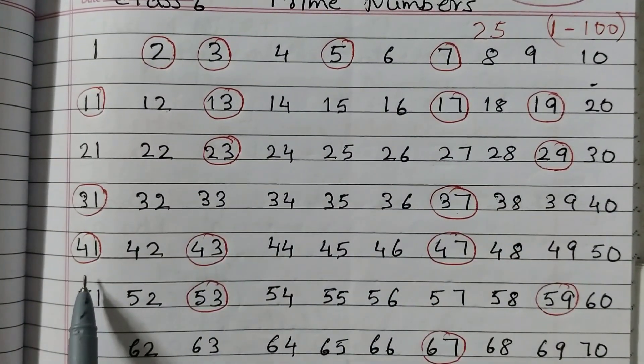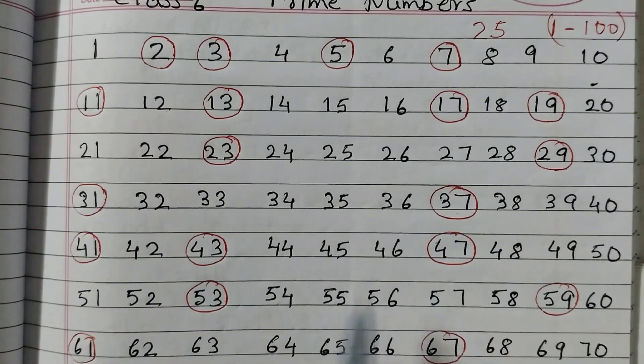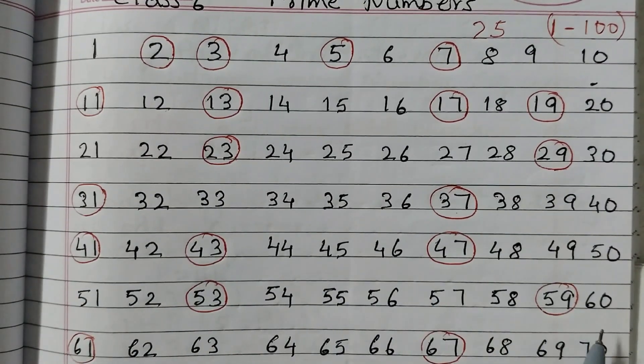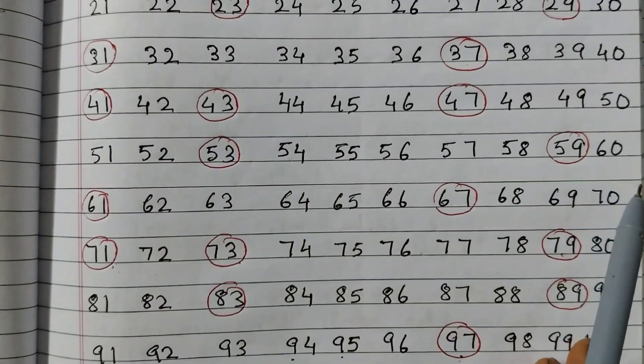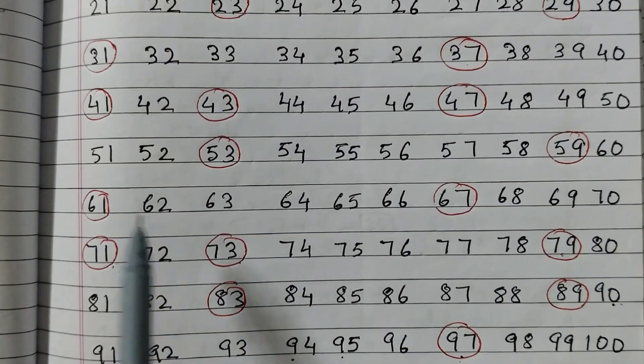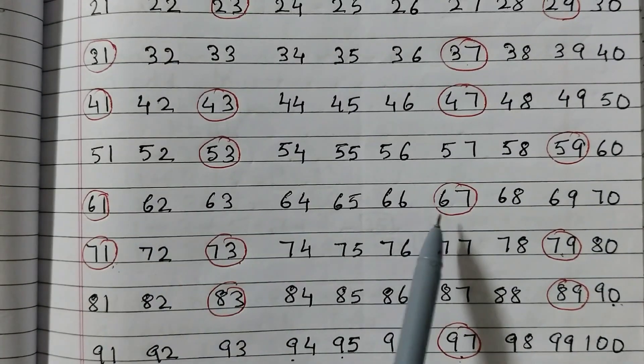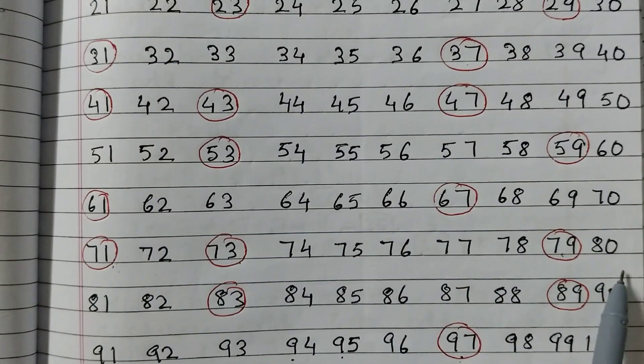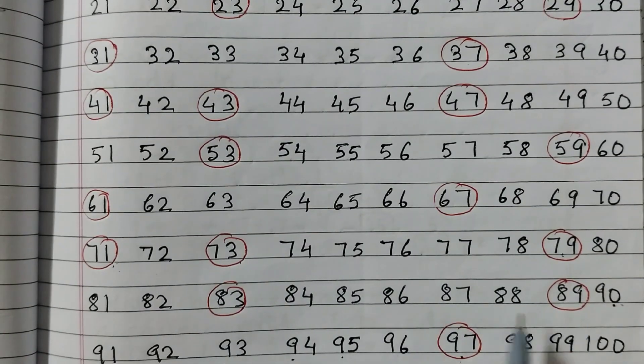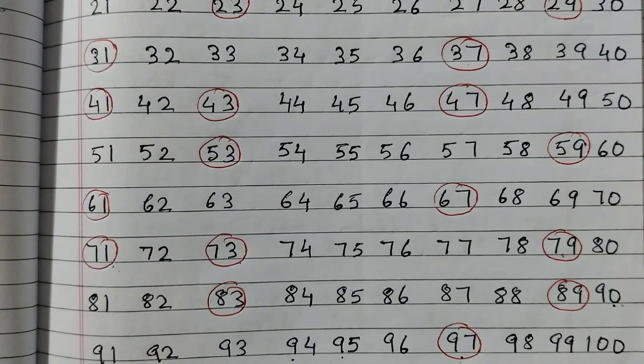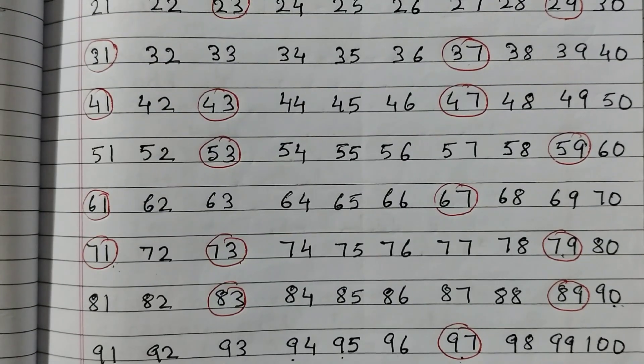Third row has 2, fourth has 2, fifth row has 3. 51 to 60 we have 2 prime numbers, 61 to 70 has 2 prime numbers, 71 to 80 we have 3 prime numbers, 81 to 90 has 2 prime numbers, and the last decade 91 to 100 has 1 prime number.